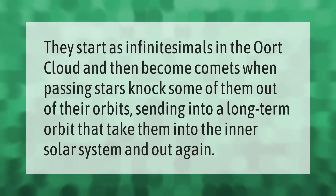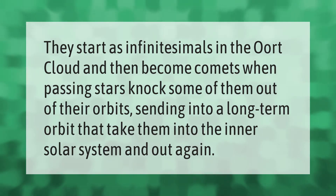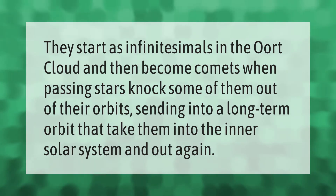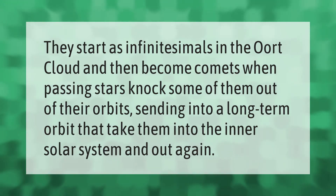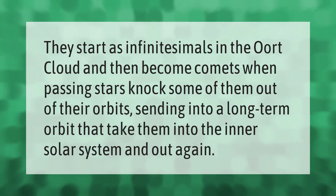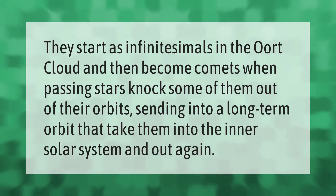They start as infinitesimals in the Oort Cloud and then become comets when passing stars knock some of them out of their orbits, sending them into a long-term orbit that takes them into the inner solar system and out again.